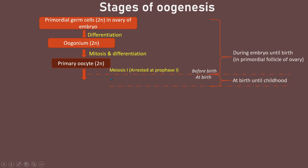At birth, the baby girl already has a particular stock — a set number — of primary oocytes arrested at prophase I in her ovary. These primary oocytes will remain in this stage throughout childhood, until before puberty.